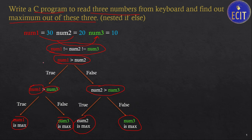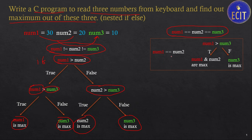We write an if condition — if this is true, we check an if-else for the nested comparison. However, we also need to handle a second case: if all numbers are equal, this logic won't work. A third possibility is that two numbers are equal — for example, if num1 equals num2, we take either num1 or num2 and compare it with num3. If it is greater than num3, those two numbers are maximum; otherwise num3 is the maximum.